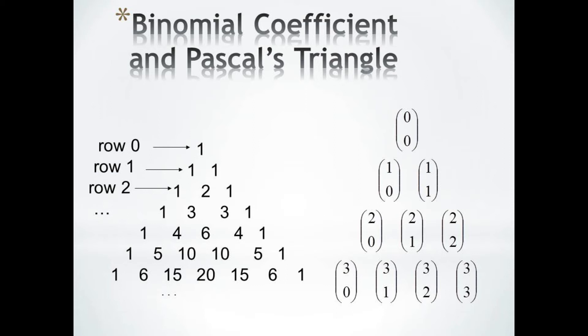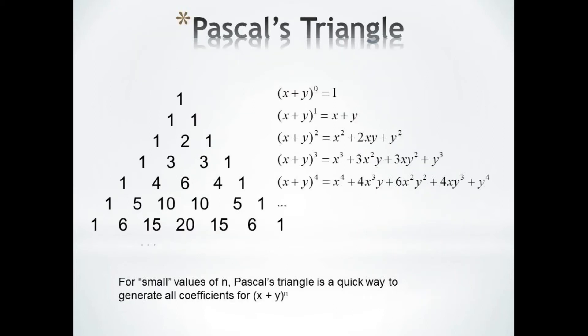Pascal's triangle has many interesting properties and patterns, but the one most relevant to us is that the elements correspond exactly to the binomial coefficients. That is, row one is the coefficients of x plus y to the first, row two is the coefficients of x plus y squared, and so on.